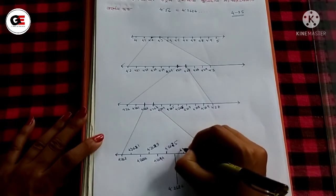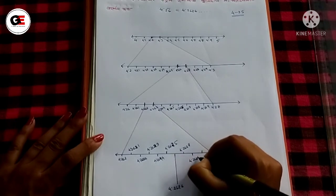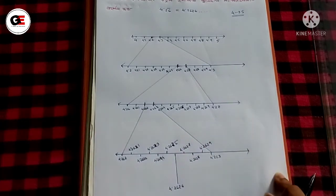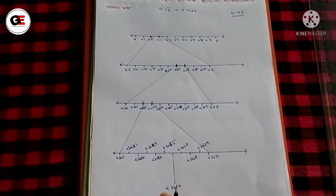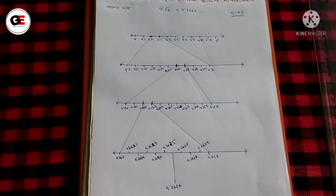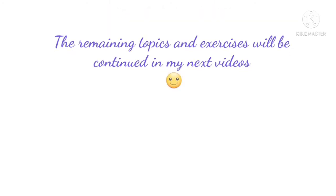So we have 4.2626, and also 3.99 and 4.2628 for reference. We locate 4.2626 on the number line. That concludes the solution. If you like this video, please like, share, and subscribe to our channel.